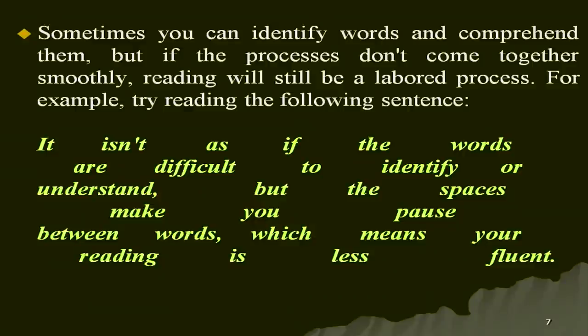Sometimes you can identify words and comprehend them, but if the processes do not come together smoothly, reading will still be a labored process. For example, if words are written with unusual spacing, the words may not be difficult to identify or understand, but the spaces make you pause between words, making your reading less fluent. Spacing also matters in reading. Writing words with proper alignment and spacing makes reading much easier.